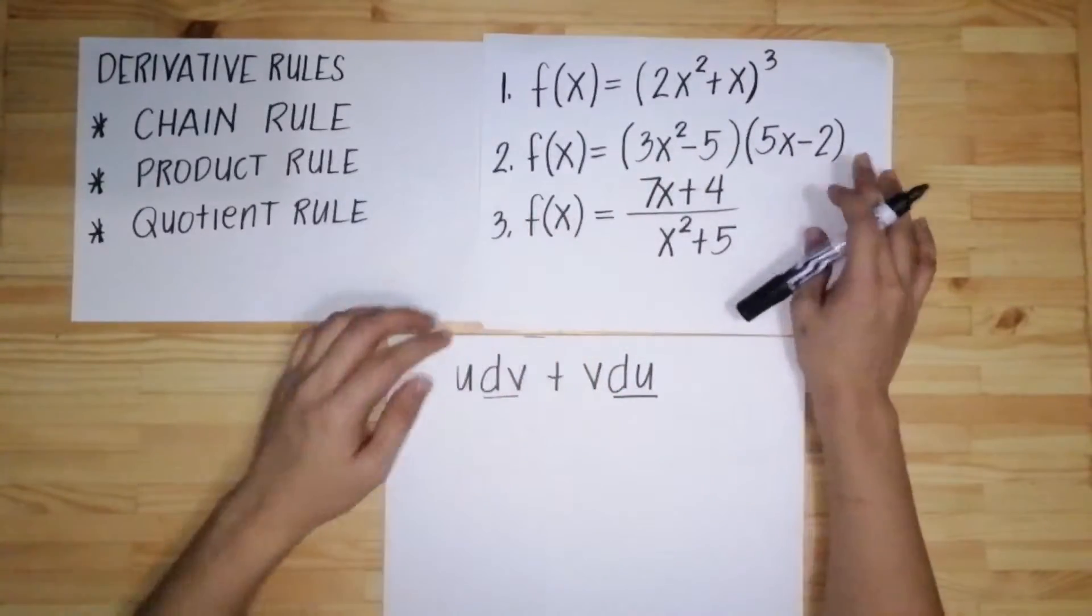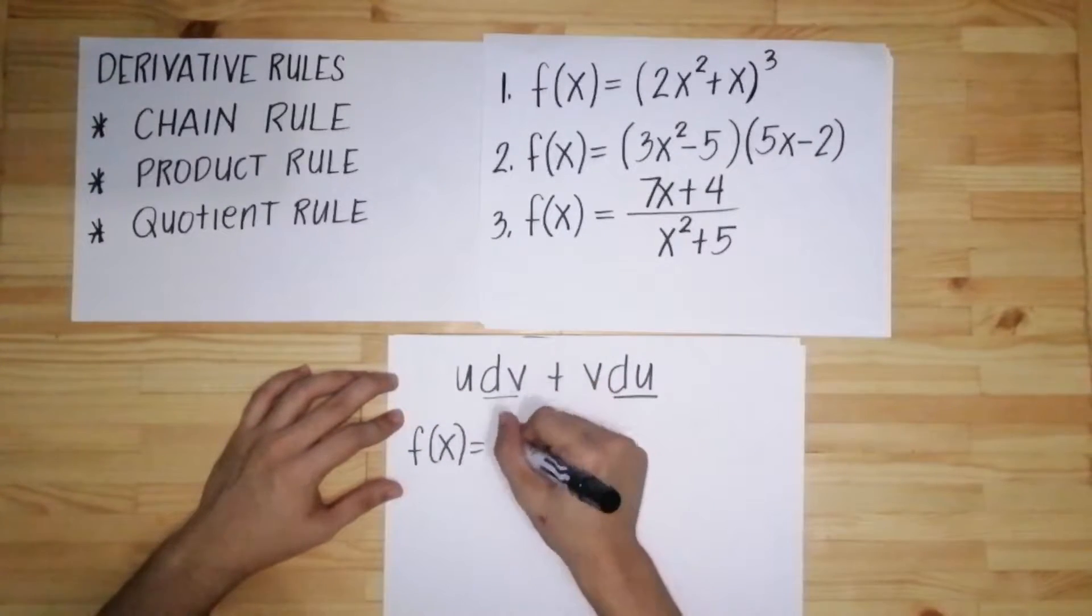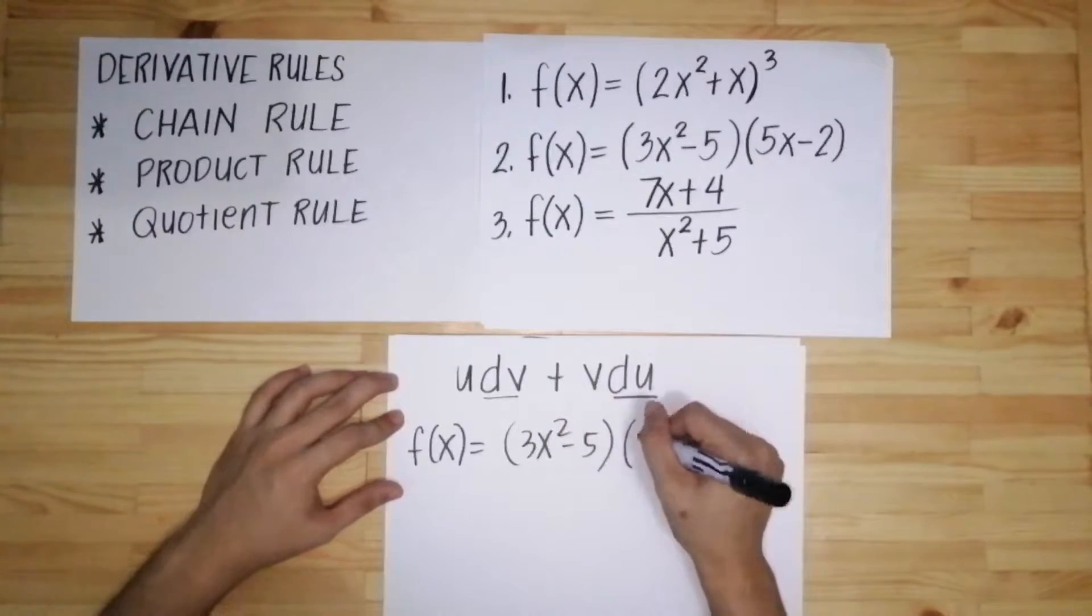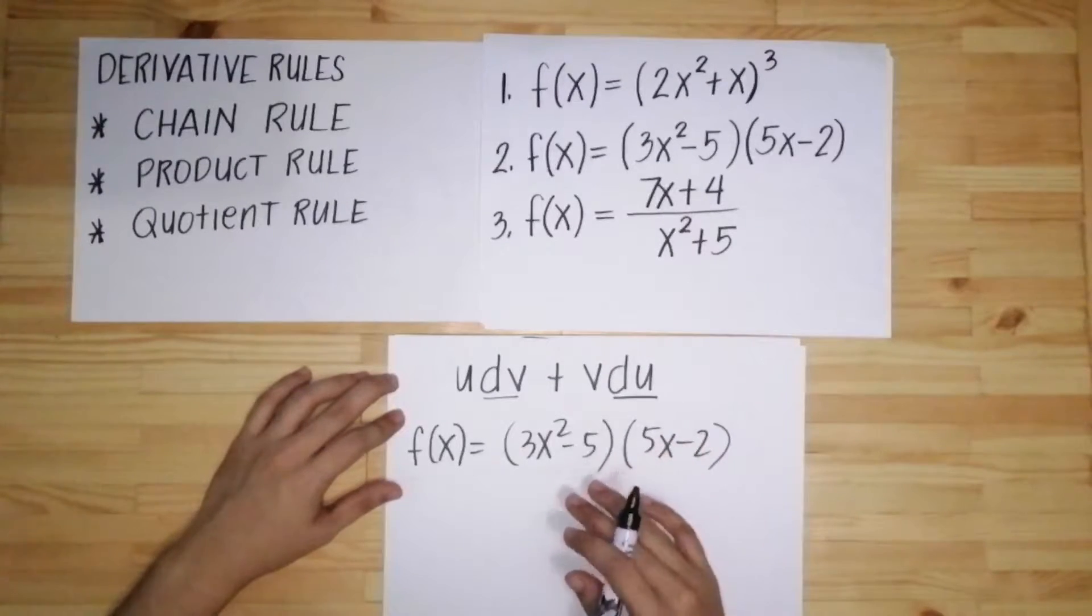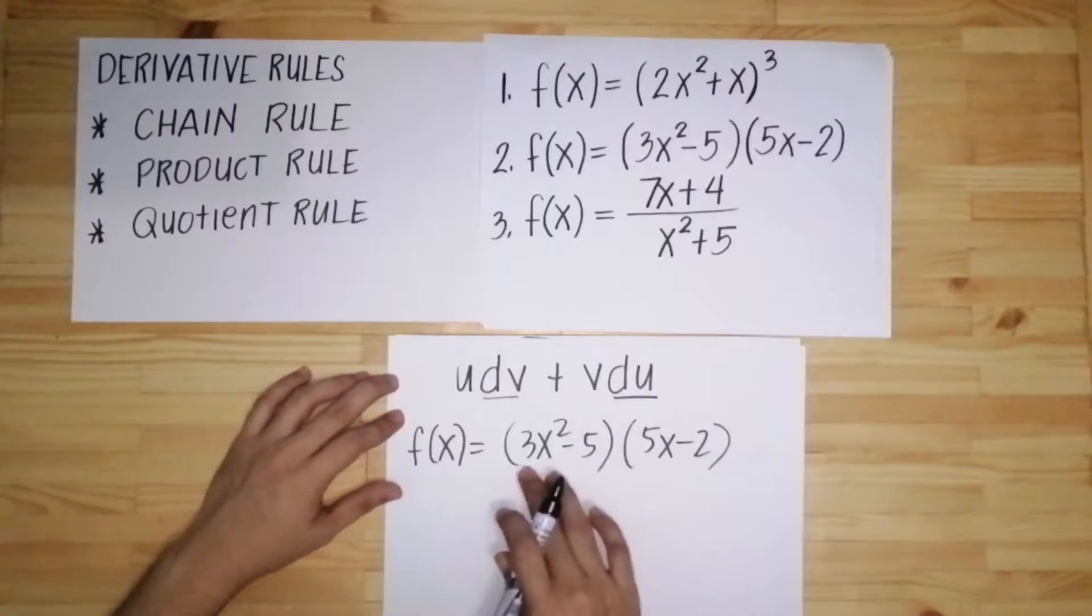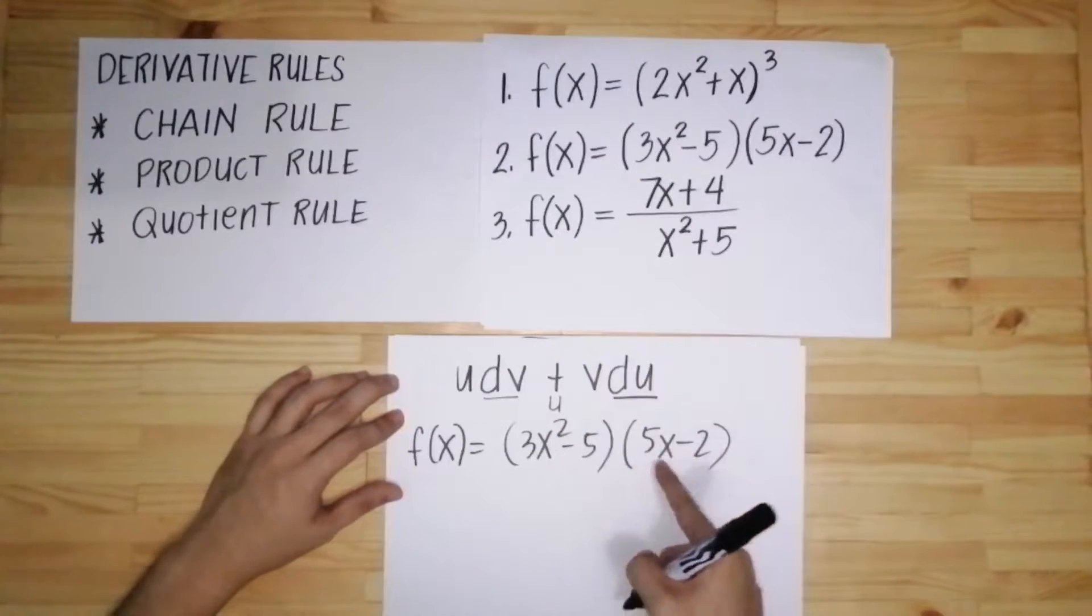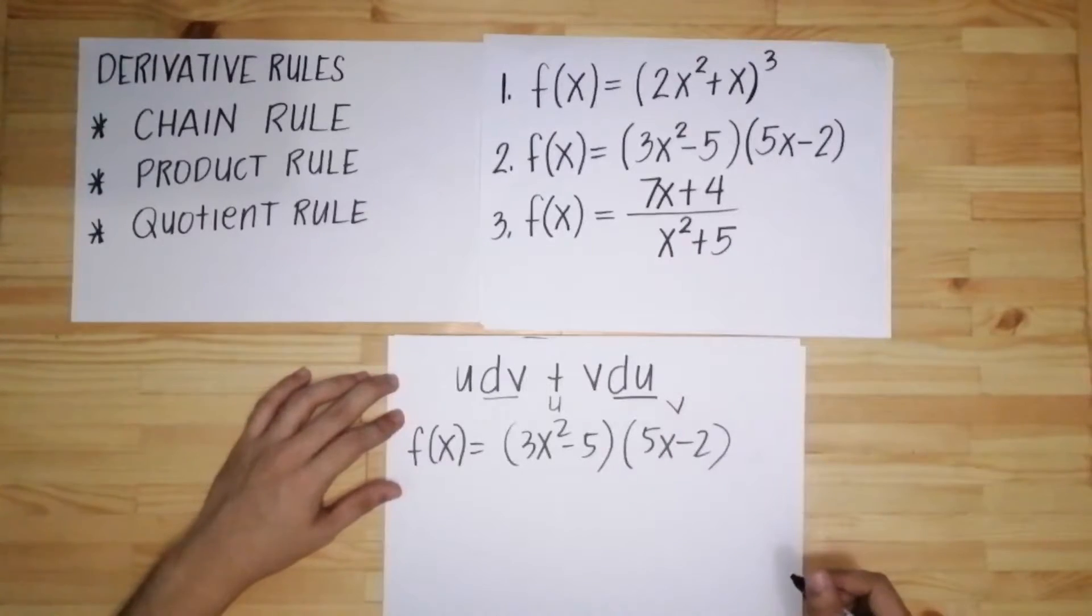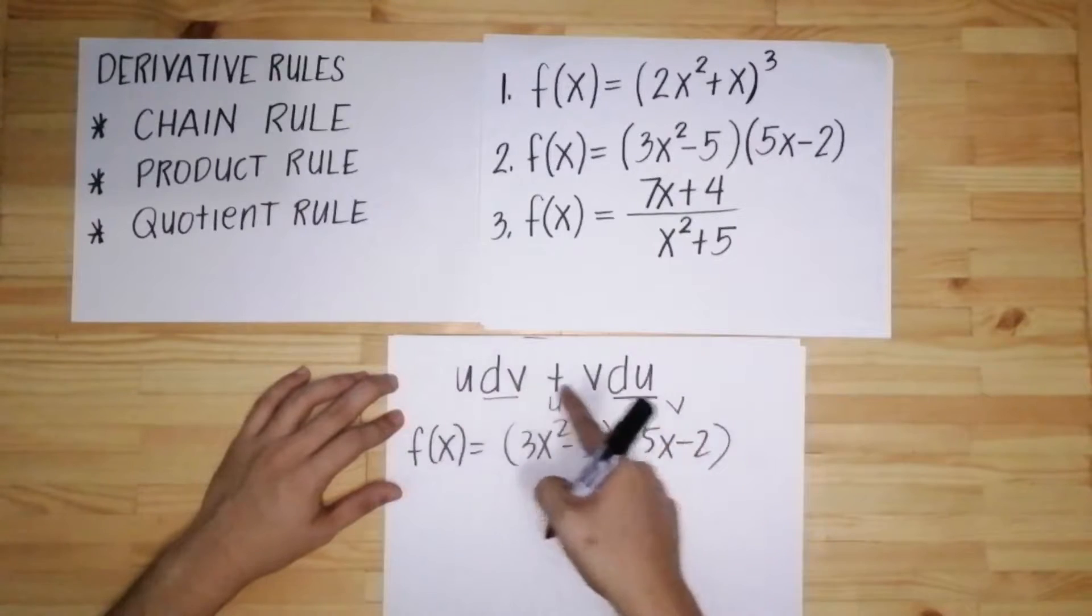So we have two factors. Copy natin, f(x) equals quantity of 3x squared minus 5, and then 5x minus 2. Usually, ang ginagawa natin, yung unang factor would be the value of u. Then, yung pangalawa is the value of v. So sundin lang natin ito to get the derivative. This is the product rule formula.